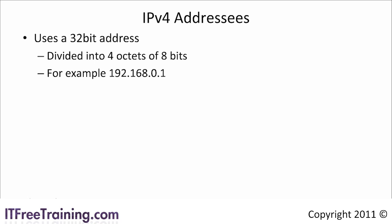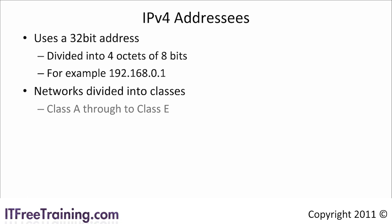An IP address identifies your computer and allows other computers to contact yours. Think of it like a telephone number. Telephone numbers have area codes while IP addresses have network IDs to help separate and organize your network into logical parts. Originally, all networking was divided into classes. These classes went from A to E and depending on the class determined how many computers could be on that network.